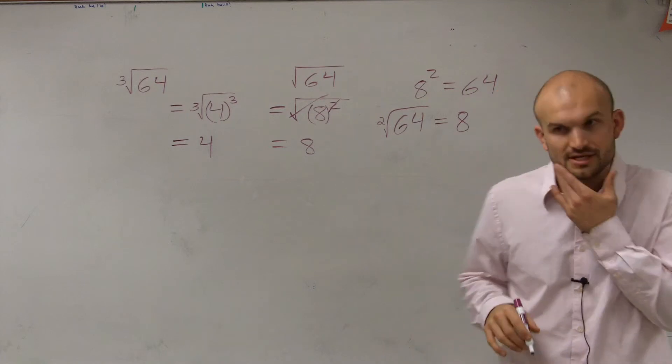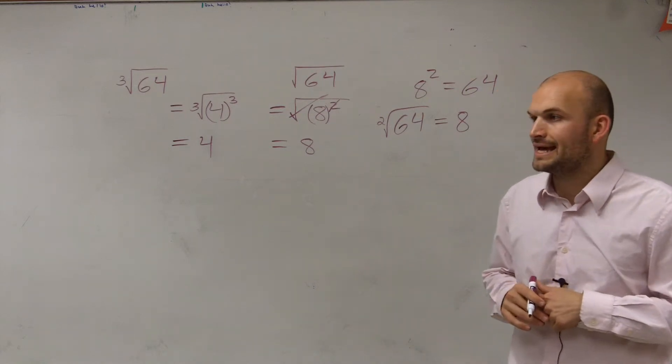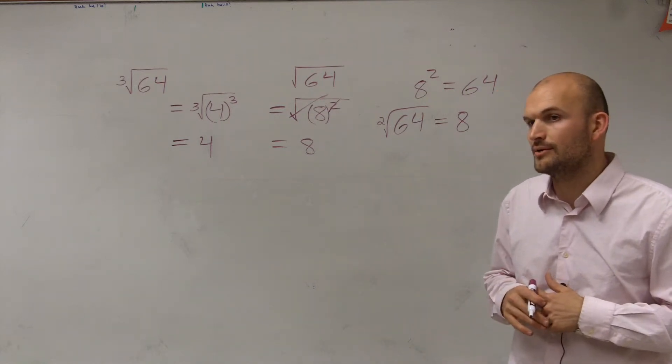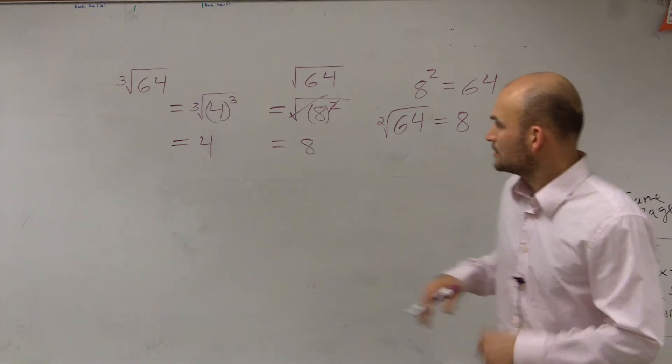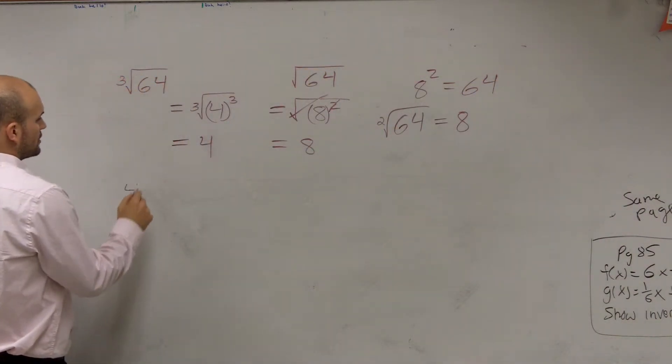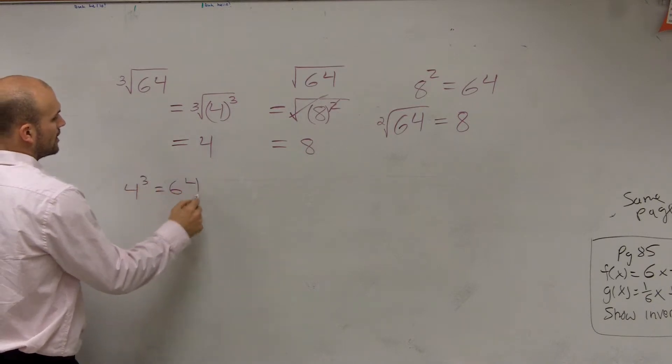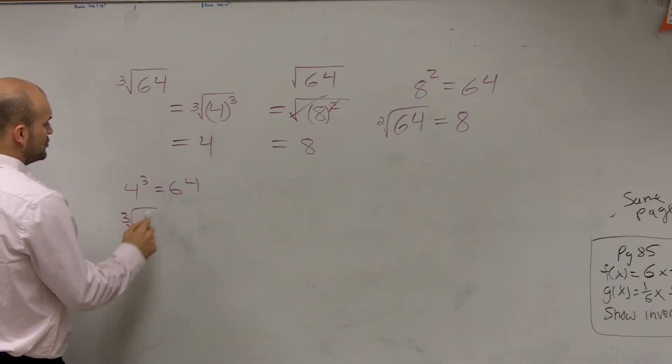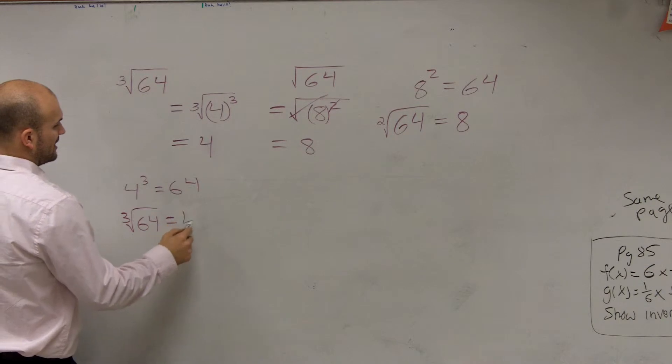So now let's start thinking about this and really looking at where we're going. We can apply the same property: 4 cubed equals 64 in the same fashion that the cube root of 64 equals 4.